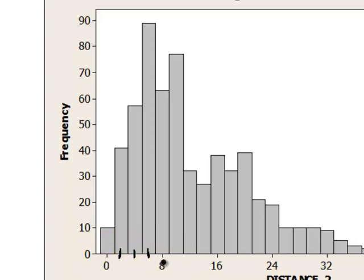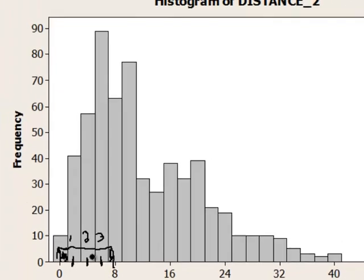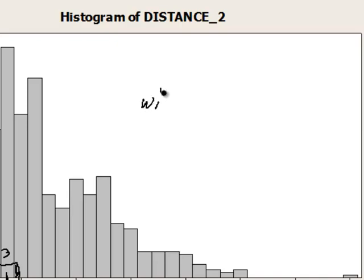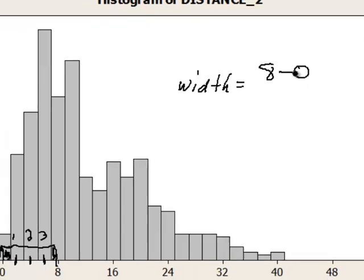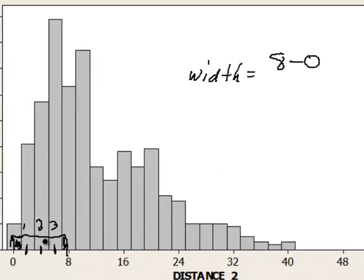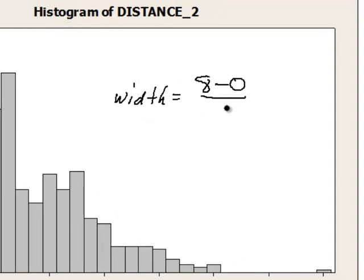So we can determine the class width by doing this. This is 0, this is 8. So the question is how many bends are between 0 and 8? Well we can see this is a whole bend, so we have 1. This is a whole bend, 2. And then we have 3. Then we have half a bend here and half a bend here. So that's a total of 4 bends between 8 and 0. So to determine the class width, we would take that value of 8, subtract 0, that gives us this distance which is 8. And then we divide it by the number of bends, which is 4. So 8 divided by 4 is 2.